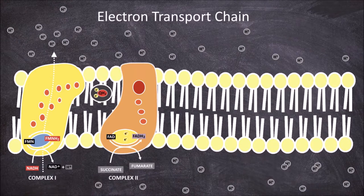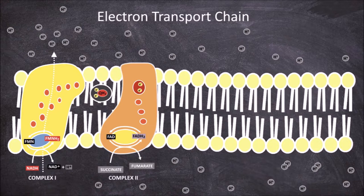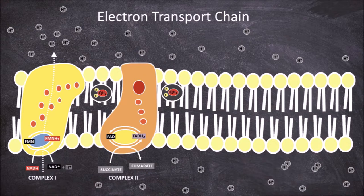The FADH2 transfers these 2 electrons to the iron-sulfur redox centers, converting FADH2 back into FAD. The 2 electrons move along the iron-sulfur redox centers until they reach the heme B containing subunit, which is the binding site for ubiquinone. It is here that the electrons are transferred to the mobile electron carrier ubiquinone, reducing it to ubiquinol. Complex 2 is not a proton pump; the electrons from FADH2 bypass complex 1 and do not add to the net flow of hydrogen protons leaving the matrix, meaning FADH2 yields less ATP molecules than NADH.